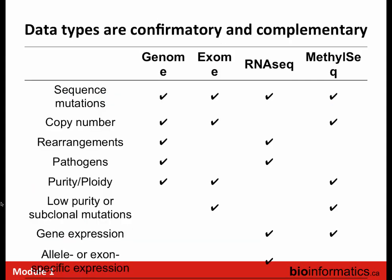This slide is really just a summary of what I've just talked about — how these data types can be confirmatory and complementary: using genome, exome, RNA-seq, or methylseq, which is the readout for epigenetic analysis. The power really comes from generating multiple different types of genome data from the exact same sample — for example, if you're interested in sequencing mutations, you can actually use exome, genome, or RNA sequencing data as well as methylseq, if you're lucky enough to have a methylcytosine instead of a mutation.